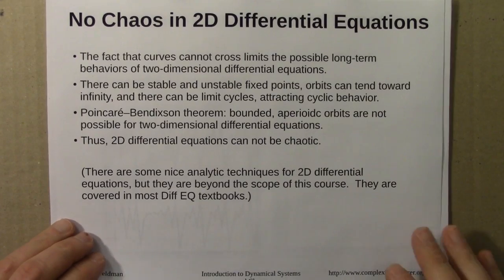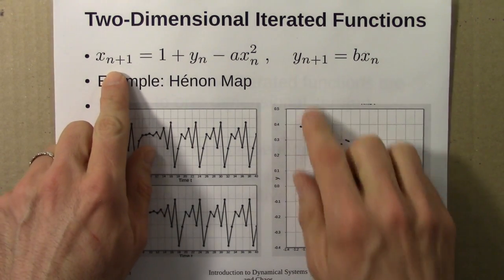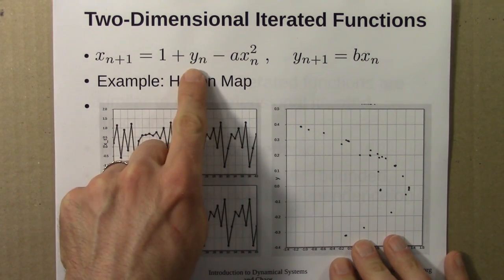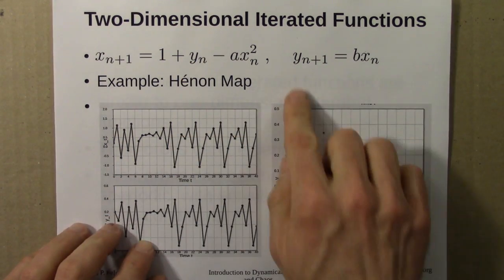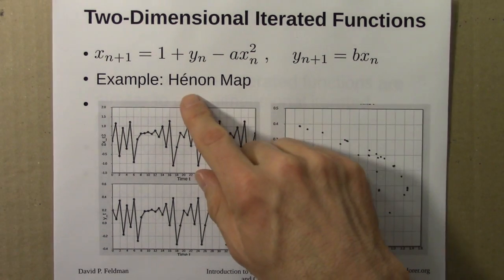So that was 2D differential equations. Then we looked at 2D iterated functions. These are like the logistic equation, an iterated function. Time moves in jumps, the population moves in jumps. But now we just have two things we're keeping track of, x and y. This says that the next value of x is this function of the current value of y and x, and the next value of y is a function only of x. This is an example known as the Hénon Map, a commonly studied example.